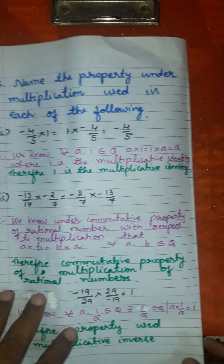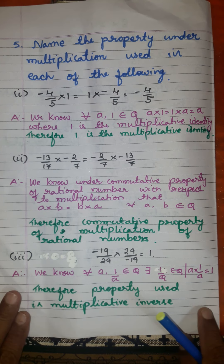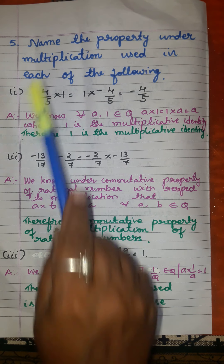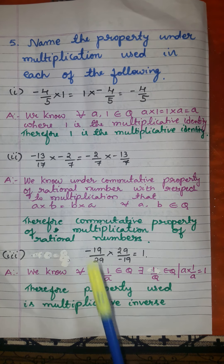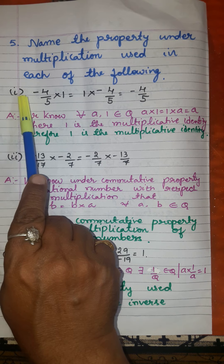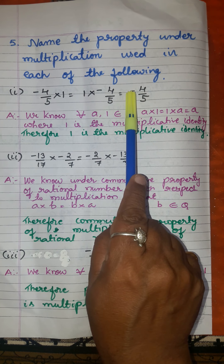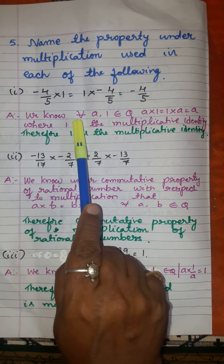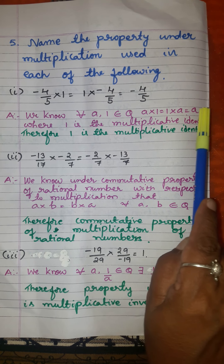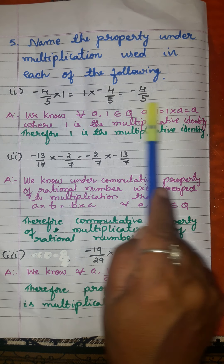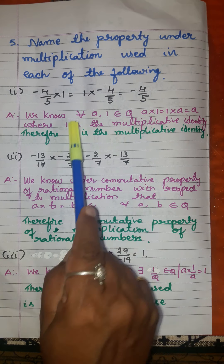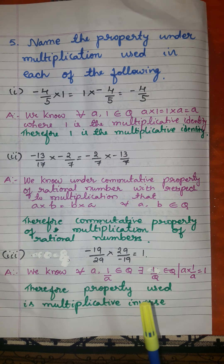Now let us move to the fifth main: name the property under multiplication used in each of the following rational numbers. The first sub-part: minus 4 over 5 into 1 is equal to 1 into minus 4 over 5, which equals minus 4 over 5. We know that for all A, 1 belonging to Q, A into 1 is equal to 1 into A equals A. Here 1 is the multiplicative identity. This tells us the existence of multiplicative identity.